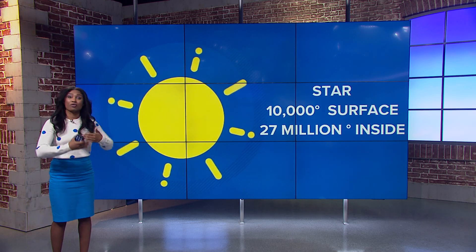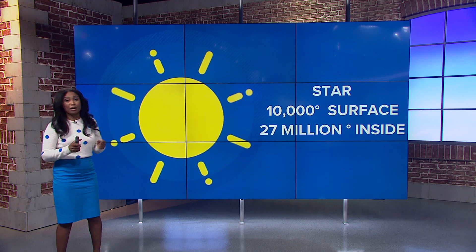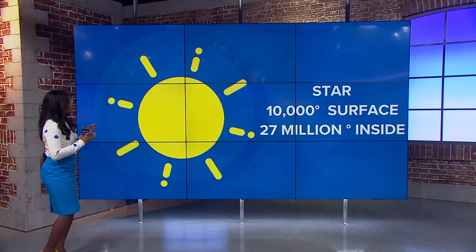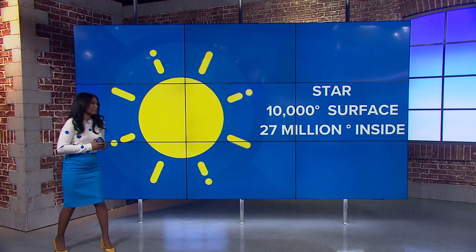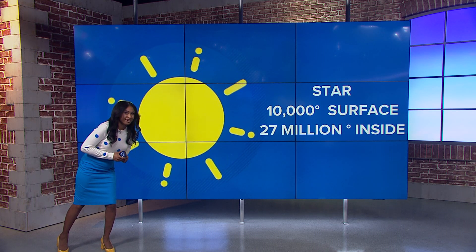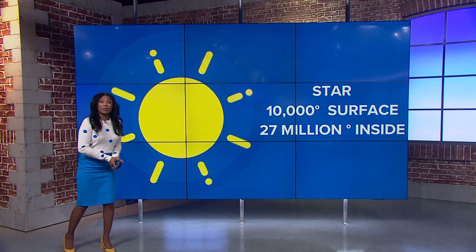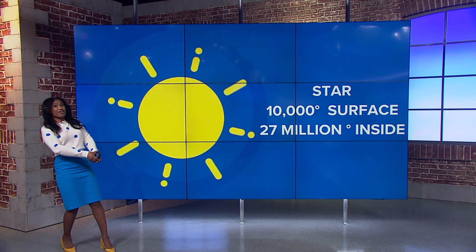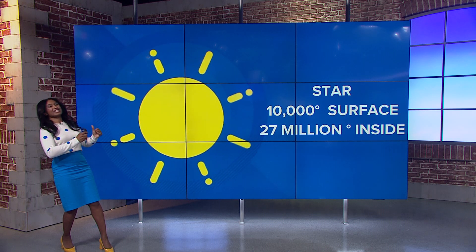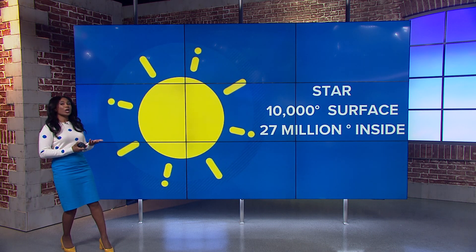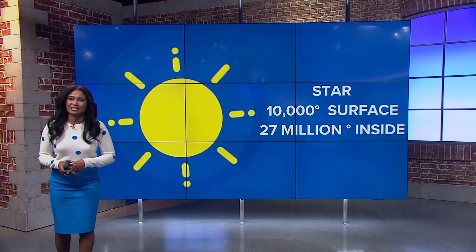The sun also helps to drive our seasons like winter and summer. When the earth is tilted toward the sun — lean in just a little bit with me — we get spring and summer. But when the earth is tilted away from the sun — lean back with me — that's when we get our fall and winter, because we're not getting as much energy from the sun.